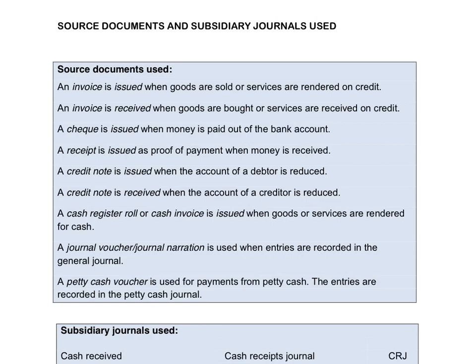An invoice issued means that the business gives the invoice to someone else. That is when the business renders a service to someone else or they sell goods on credit. So goods sold or a service that was provided on credit to your customers — you will issue an invoice.